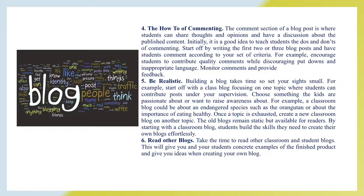Fifth: monitor comments and provide feedback. Sixth: be realistic — building a blog takes time, so set your sights small. For example, start off with a class blog focusing on one topic where students can contribute posts under your supervision. Choose something the kids are passionate about or want to write awareness about, such as an endangered species like the orangutan or about the importance of eating healthy. Once a topic is exhausted, create a new classroom blog on another topic. The old blogs remain static but available for readers. By starting with a classroom blog, students build the skills they need to create their own blogs effortlessly.